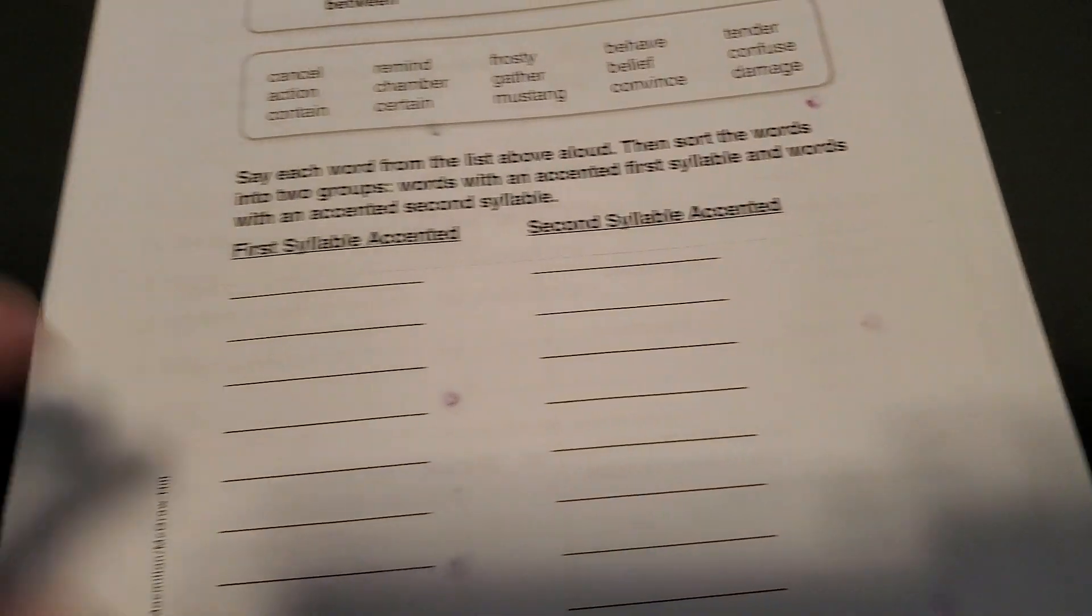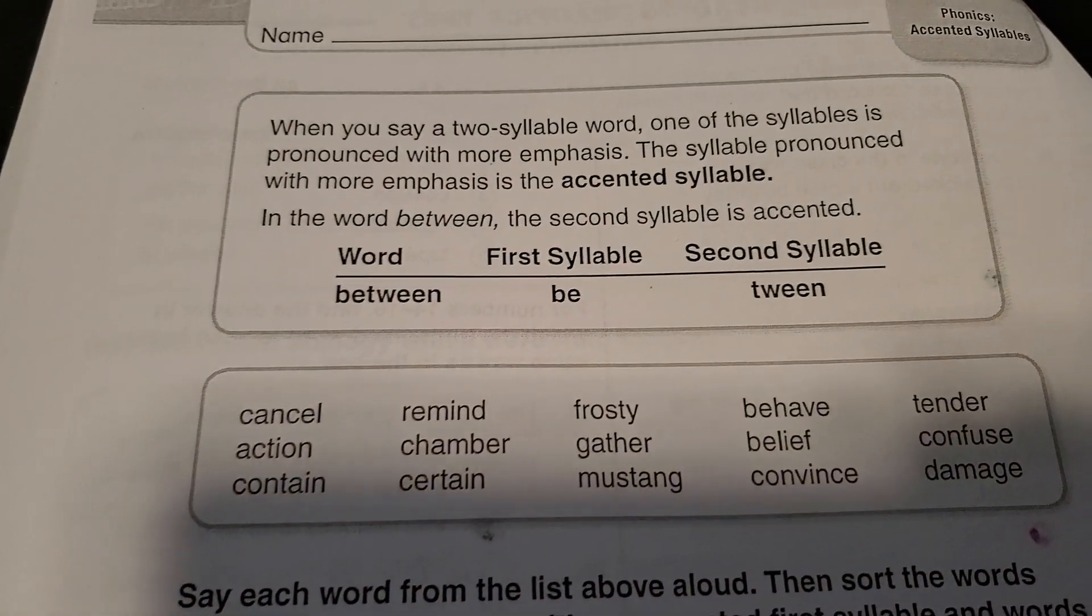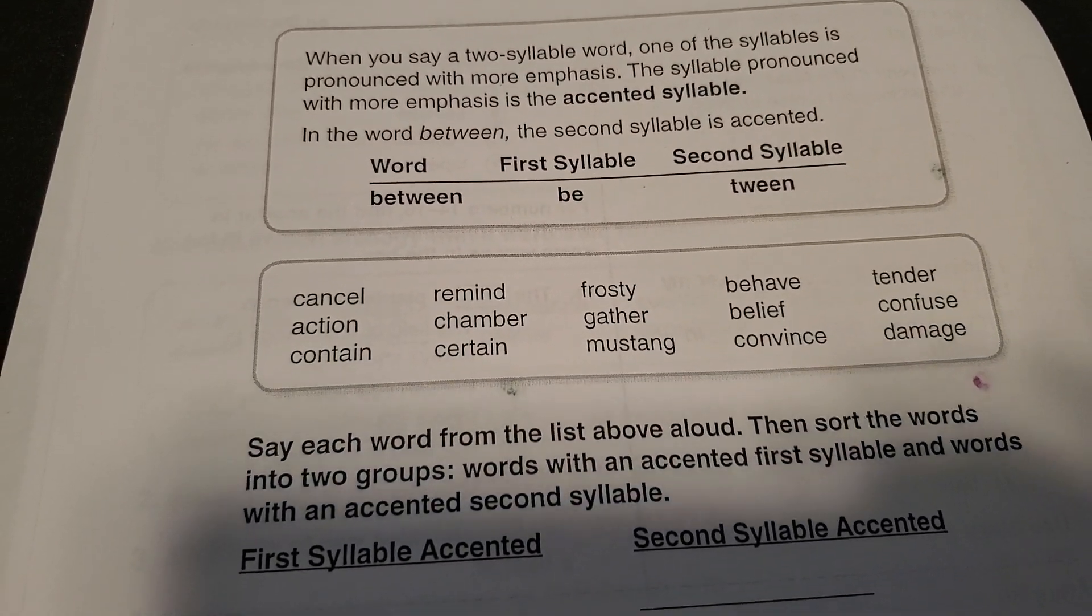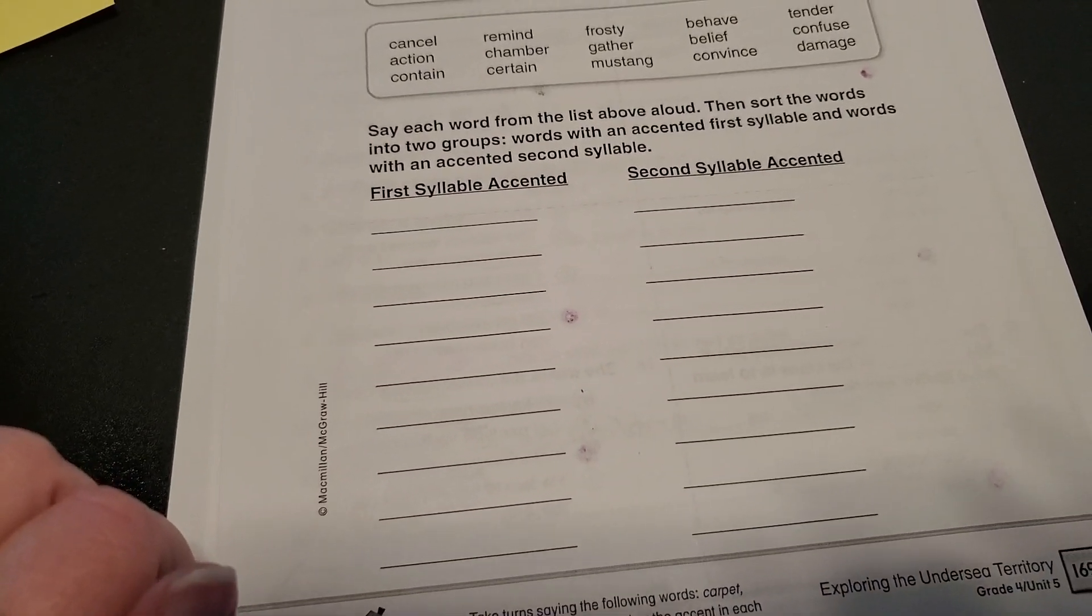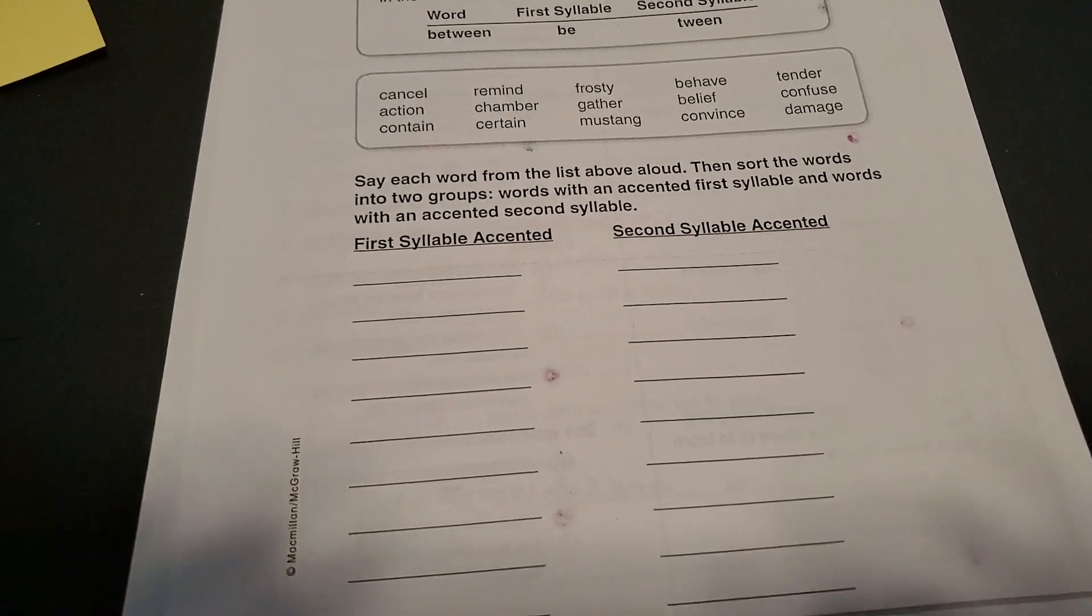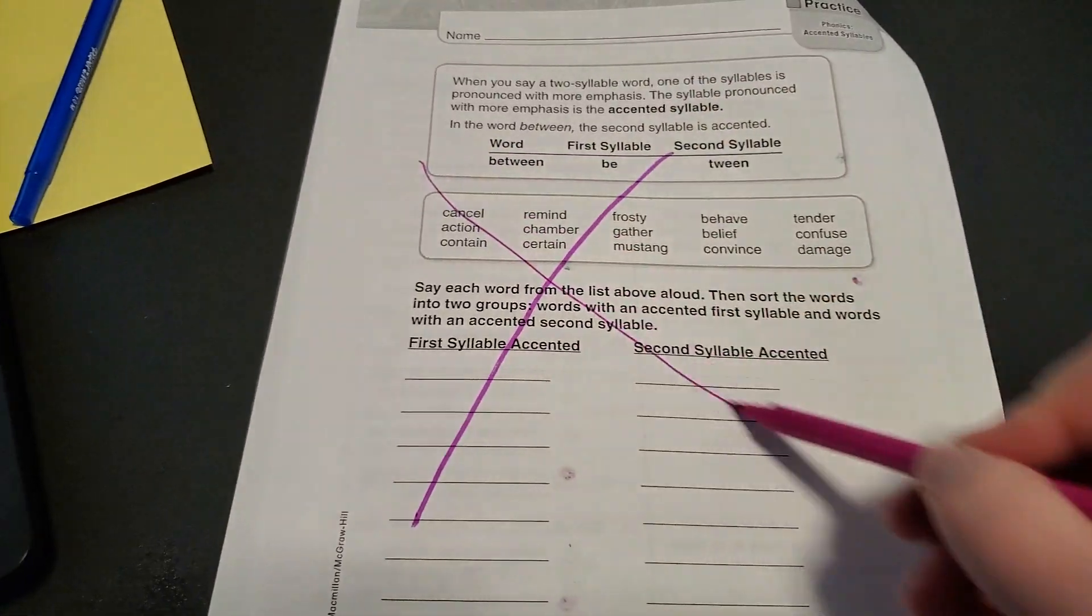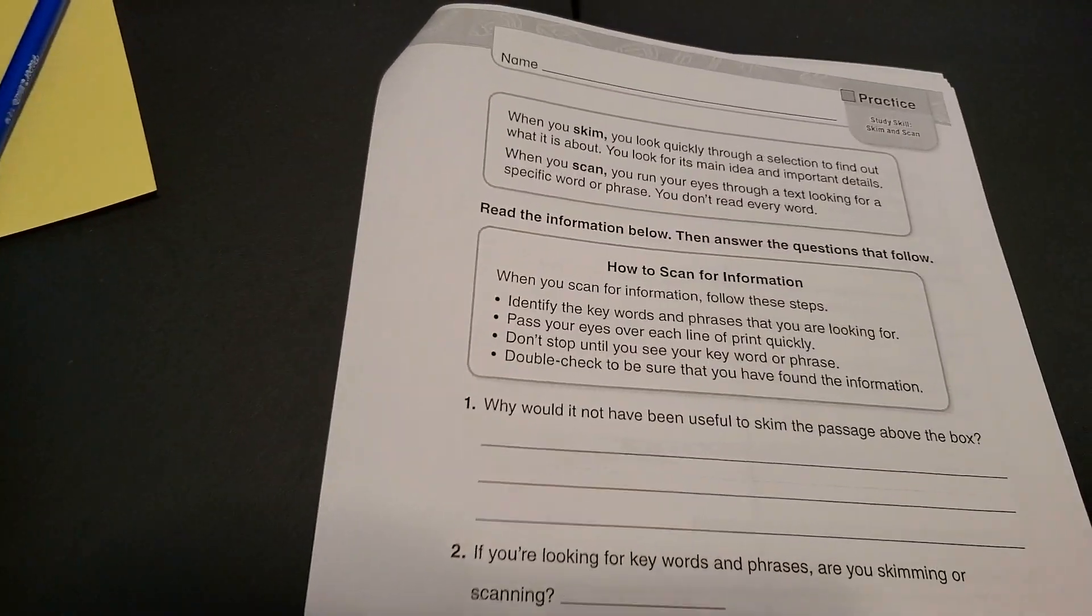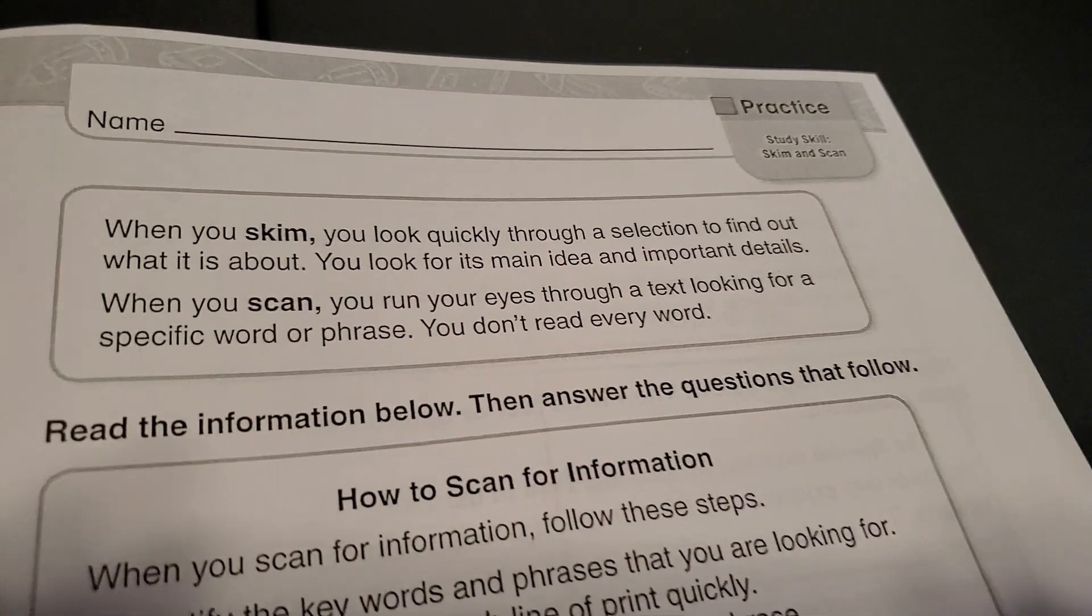Alright, so go ahead and turn your packet over to the next page here. We are going to be taking a look at a two syllable word. One of the syllables is pronounced with more emphasis. You know what, you guys? I am just going to tell you right now that this page is the least favorite page that we do the entire year. And to me, it is not worth it to torture parents and students. And so we're just going to put an X through it. You don't have to do that page. Turn it over. Just flip it like a pancake. We're not going to do it. We're going to skip it and go on to our skimming and scanning, which is a much more important skill.